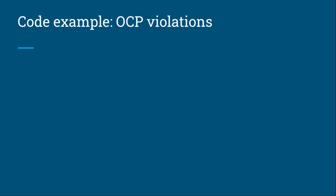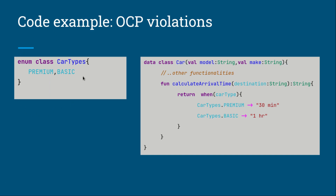Let's look at a code example that violates OCP. Here we have a class that calculates the arrival time, and it depends on two constants. If the car type is premium, it returns 30 minutes; if it's basic, it returns one hour. This class is really difficult to maintain because whenever we change the car types — for example, adding a 'Premiere Pro Max' that takes only 10 minutes — we have to modify the calculate arrival time method again, which can easily break other logic. You could have thousands of lines of code depending on this function.